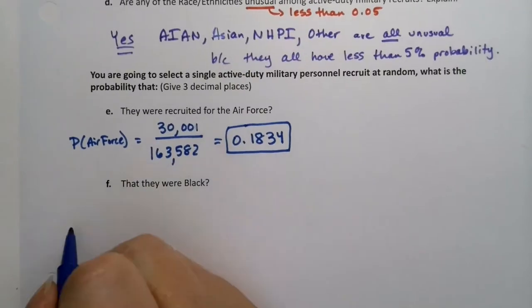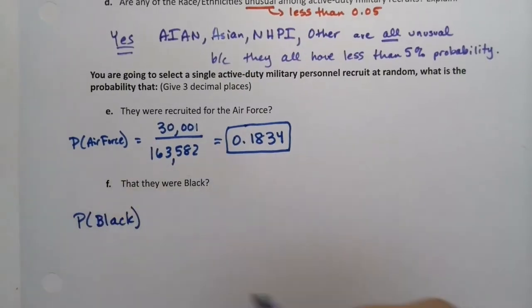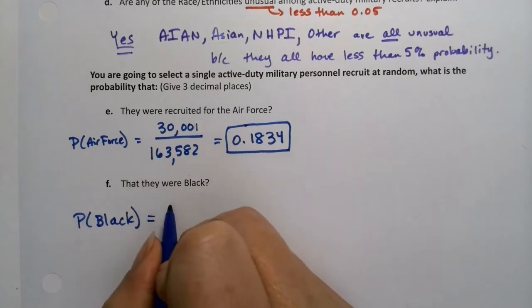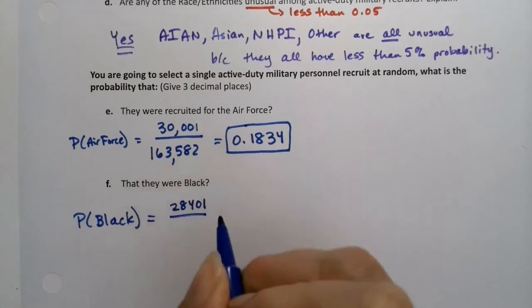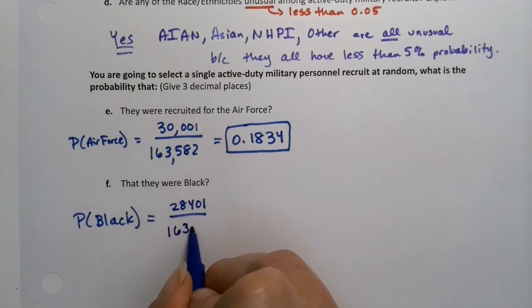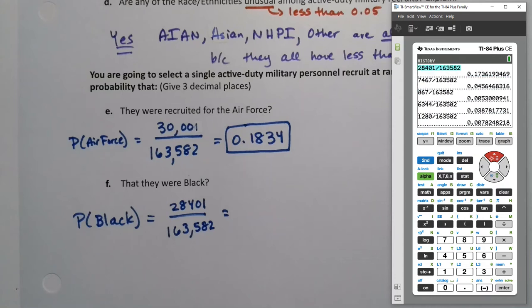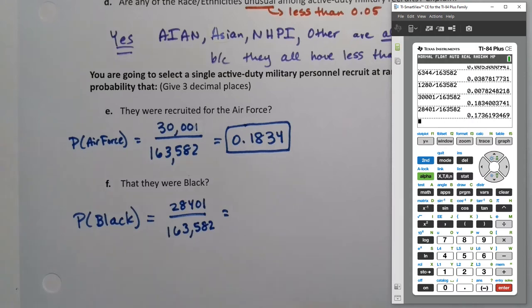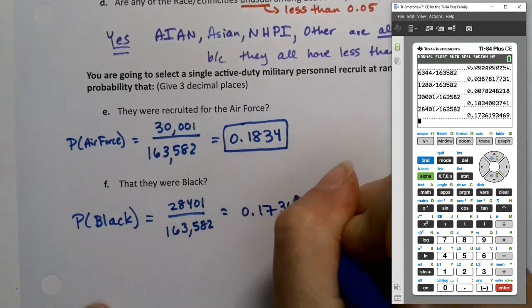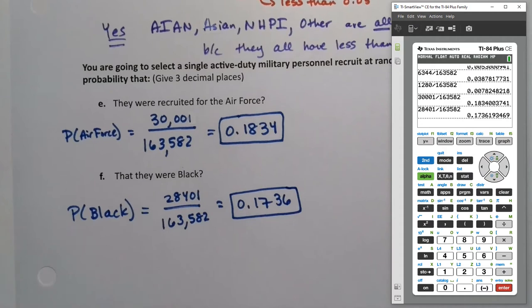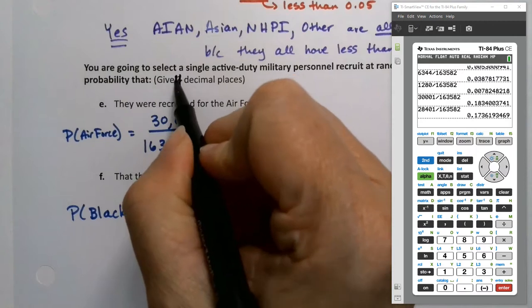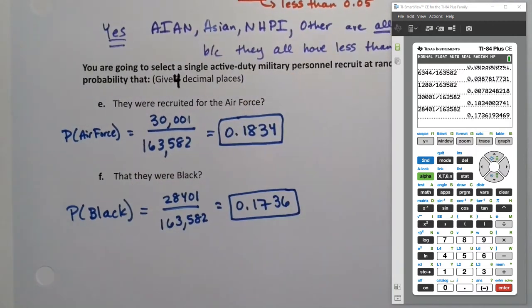And then they want the probability of black. We actually already found this, which is 28,401 divided by 163,582, which is on my calculator still. I might have to go up a bit to find it. There it is. So if I grab it again, I can press enter and rerun it. It's 0.1736. I guess I might as well change it to four decimal places since that's what I did for both of them. Might as well get used to it.